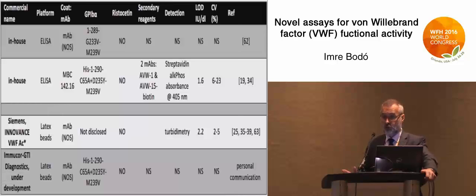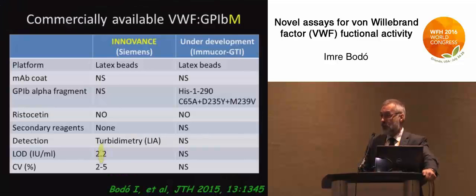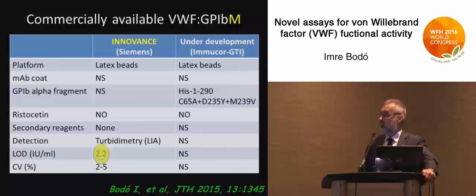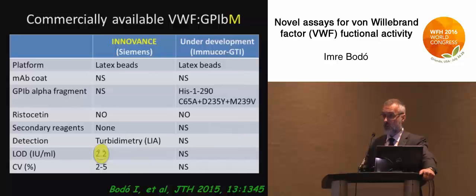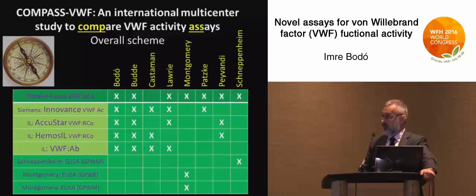For the GP1B-M versions, two are commercially available — really only one, because the second one marketed by ImmunoCore is still in development and not yet marketed. The one by Siemens is available in most countries in the world; unfortunately it is not yet available in the United States, but hopefully that will change soon. The limit of detection is again very good, with good precision for this assay.